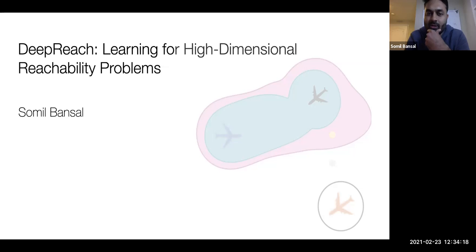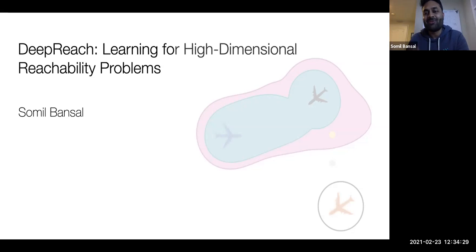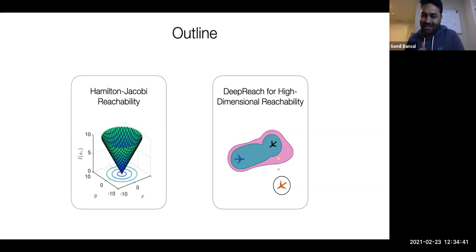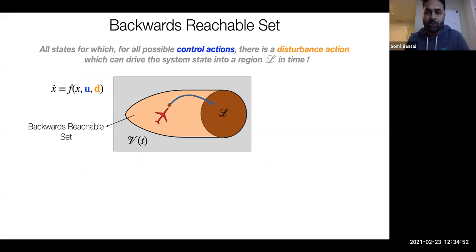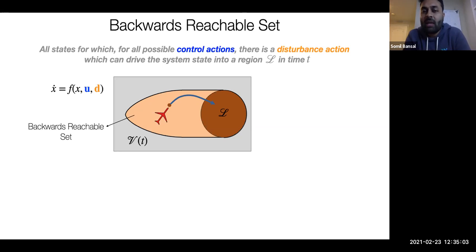What DeepReach does is that it learns high-dimensional reachable sets using machine learning. If I have time at the end, I would also touch upon the reverse problem: how we can use Hamilton-Jacobi Reachability Analysis to provide safety guarantees about machine learning. I know you've probably seen Hamilton-Jacobi Reachability several times at this point, but let me quickly provide a five-minute overview that will help set the notation for the rest of the talk.